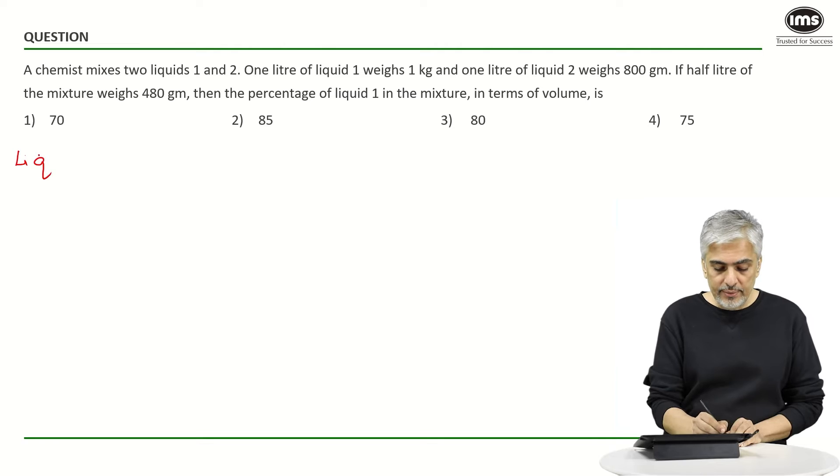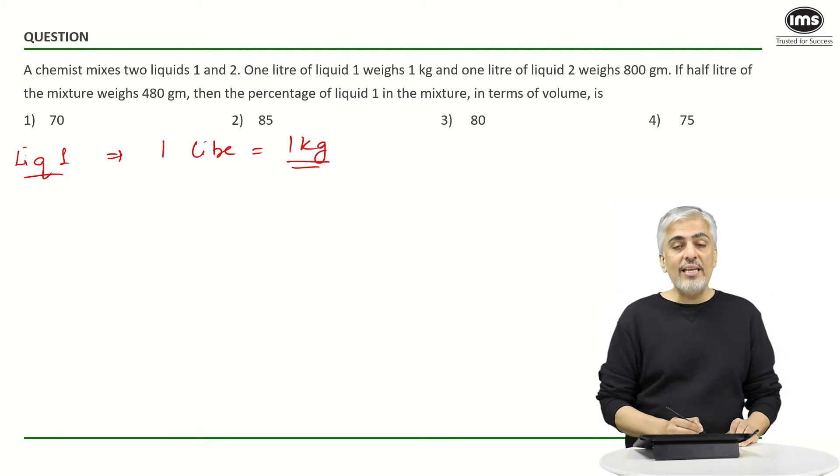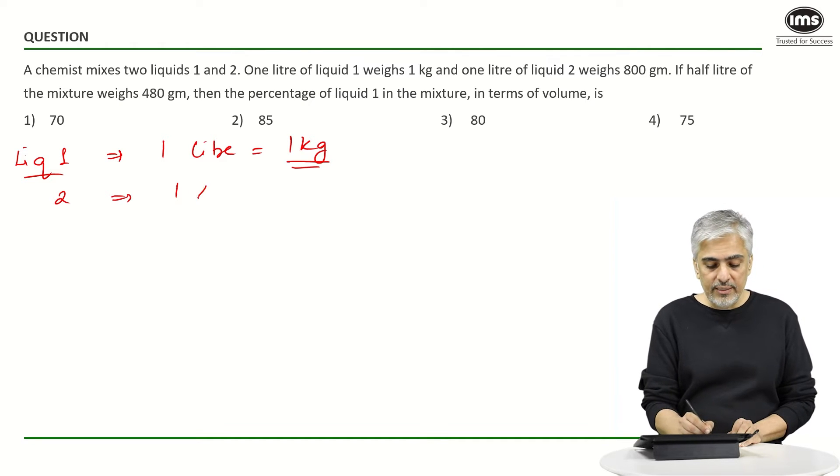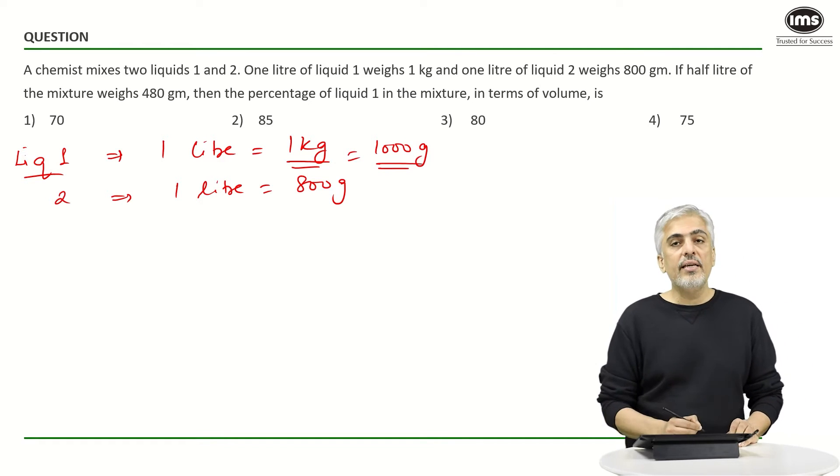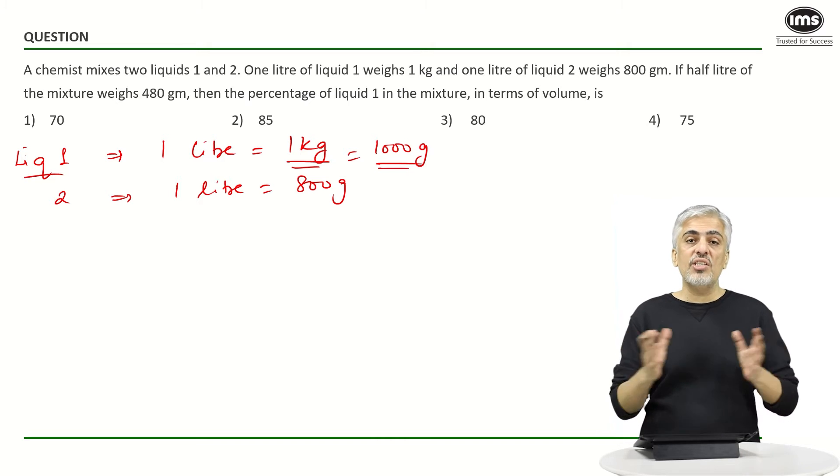Liquid 1, one liter weighs 1 kg, while liquid 2, one liter weighs 800 grams. So if I want to write this also in grams, this is 1000 grams, right? If half a liter of the mixture is taken...